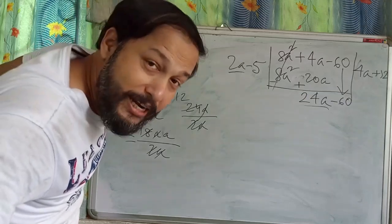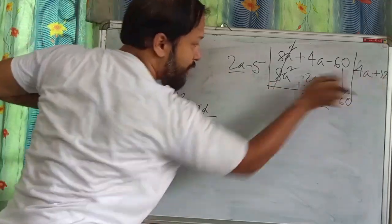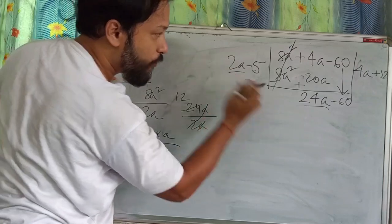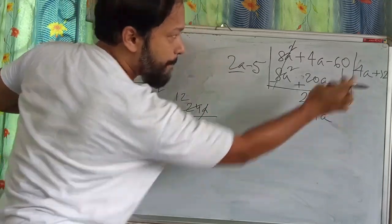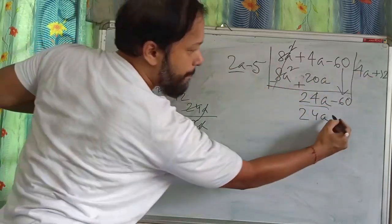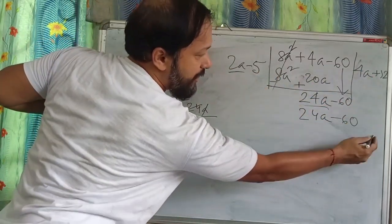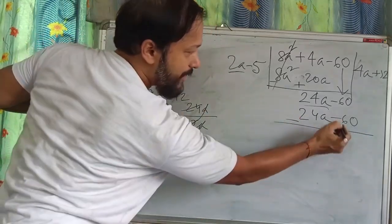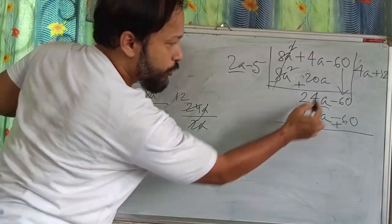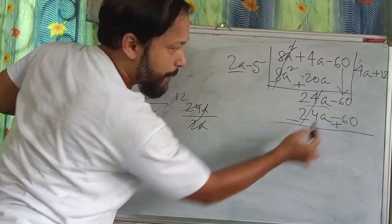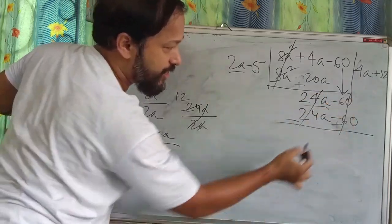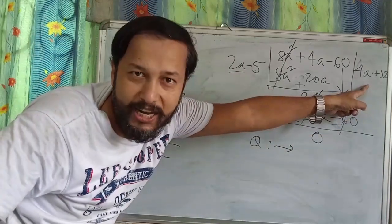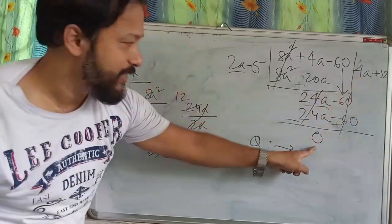By this 12, multiply the whole divisor: 12 times 2a gives 24a, and 12 times minus 5 gives minus 60. Change the sign again — plus becomes minus, minus becomes plus. So 24a cancels, and minus 60 plus 60 also cancels — remainder is zero.